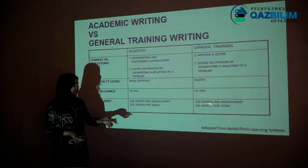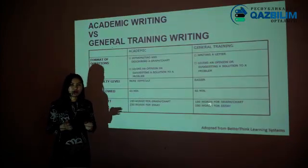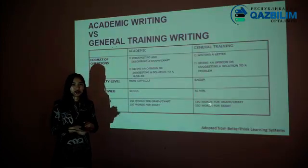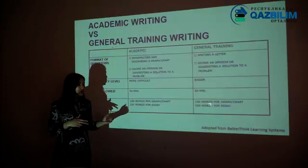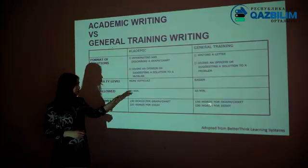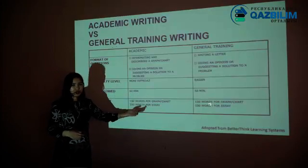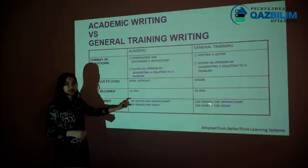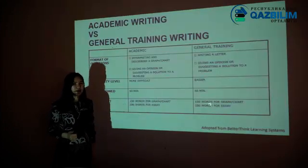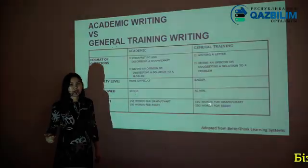The duration of the writing test is 60 minutes. You are recommended to spend 20 minutes on the first task and 40 minutes on the second task. The word limit is 150 words for task 1 and 250 words for task 2 — though this is not a strict limit but the recommended number of words. This applies equally to the letter and writing part 2 for General Training.